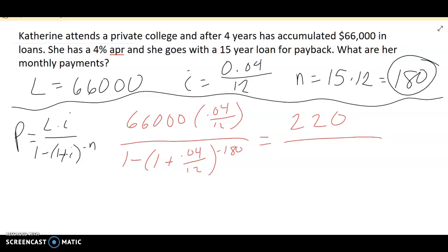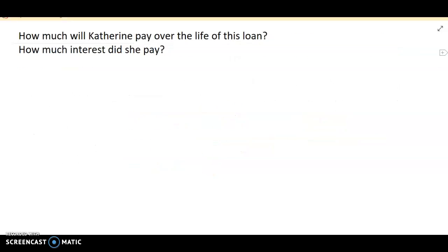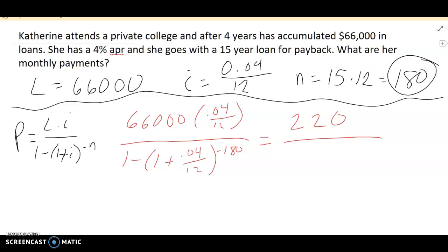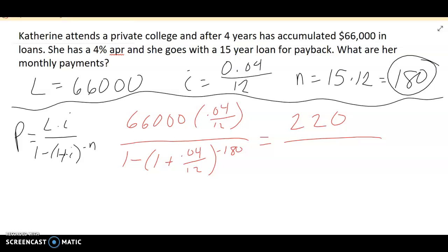The denominator, on the other hand, is a little bit uglier. So we're going to make sure that we do this with step-by-step procedure. So first things first, we do inside. 1 plus 0.04 divided by 12 gives us 1.00333, and it keeps going.